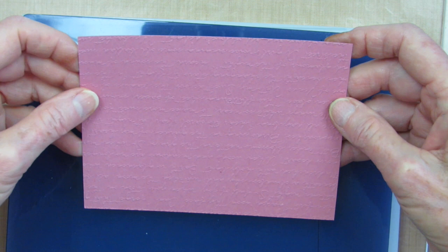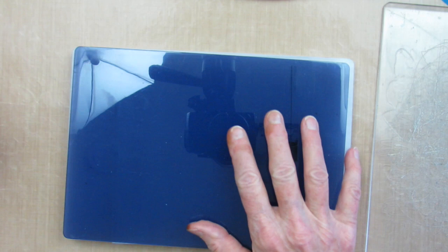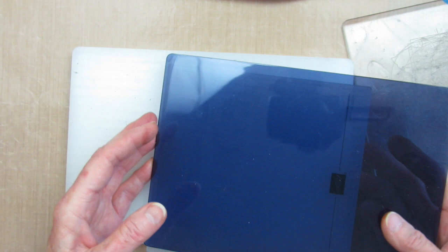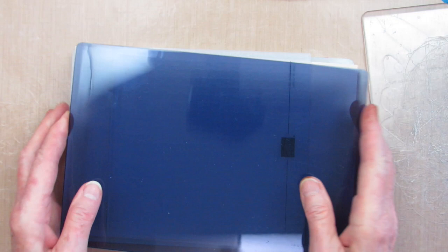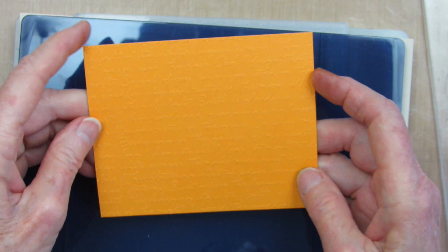The impression I got was not deep enough, so I decided to add a shim. When you use shims, you want to add the thinnest possible and build up one at a time so you don't damage your machine. I started with a piece of regular cardstock on top of the platform, then the embossing folder and the plate on top of that.